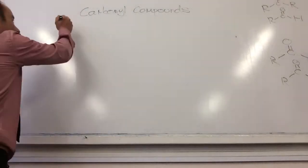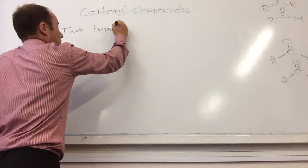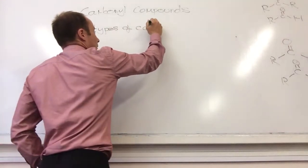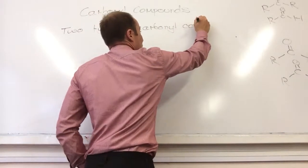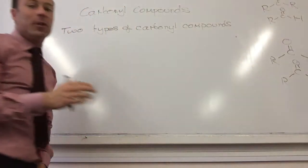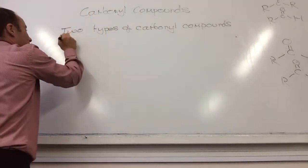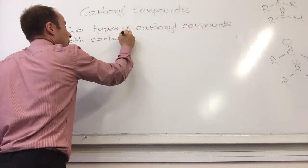Okay, so there are two types of carbonyl compounds. Both must contain this group - this C double bond O group.